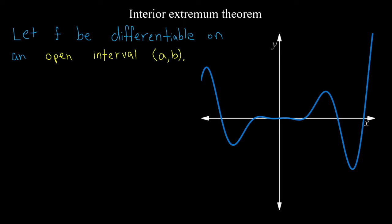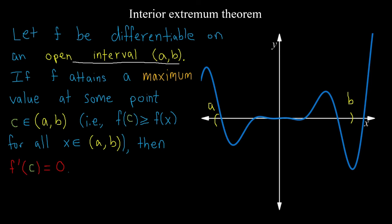We let f be a differentiable function on an open interval from a to b. Let's say maybe this is our a here, this is our b. What the theorem says is if f attains a maximum value at some point c, which is in our open interval, so what that means is that f(c) is greater than or equal to f(x) for all the other values on our interval, then the derivative of f at c is zero.